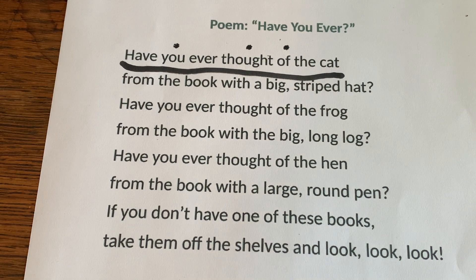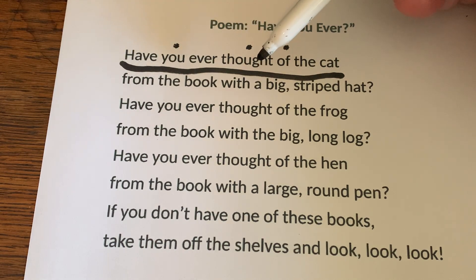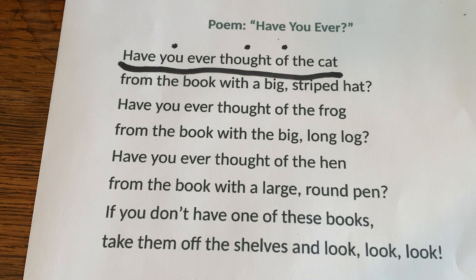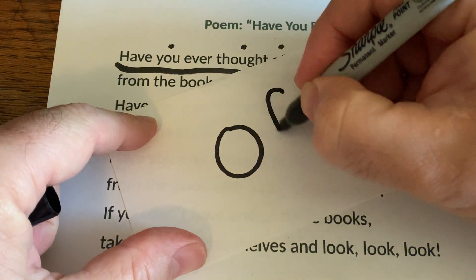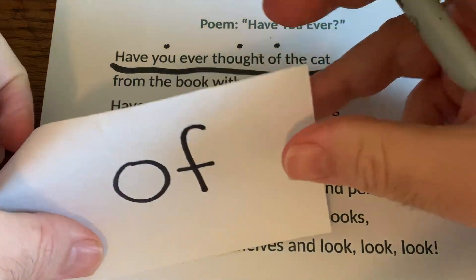I'm going to give you one more hint. The first mystery word has an O in it and it only has two letters — a two-letter word with an O in it. Is you a two-letter word? No, it's got three letters. Thought — is that a two-letter word? No, it's got seven letters. How about of? Is of a two-letter word with an O in it? It sure is. So if we follow those two clues, that tells us that of is our first mystery word. And we're going to go ahead and add that to our flashcards. Of. Of.